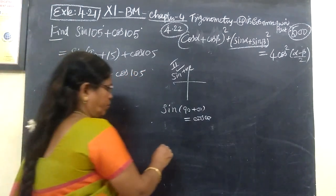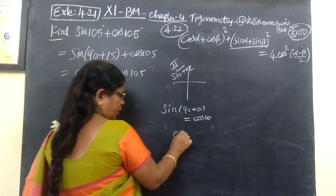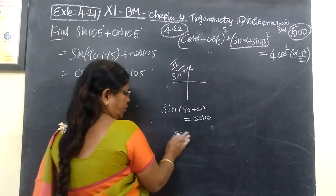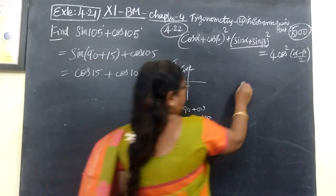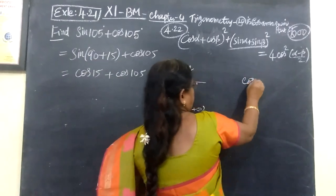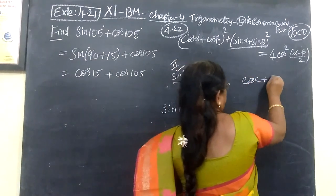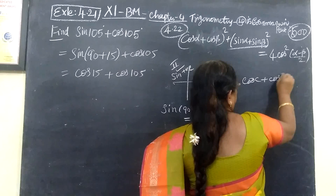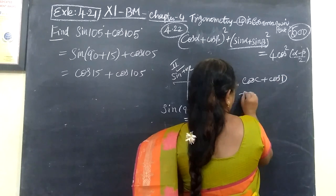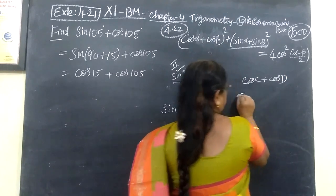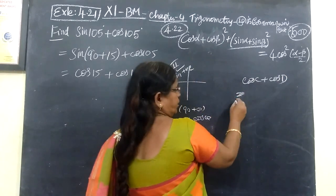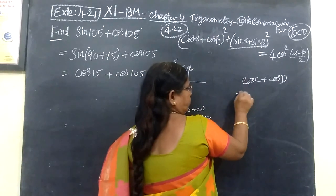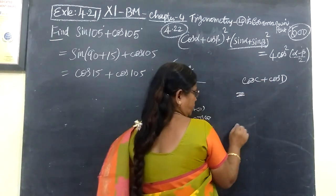And here we are using the formula. Cos C plus cos D. Cos C plus cos D equals — this is plus, so one more plus or minus.